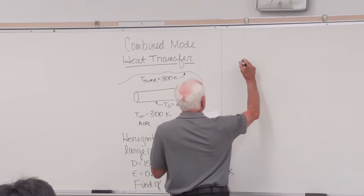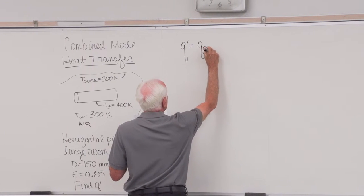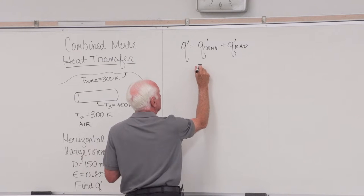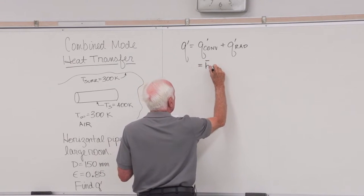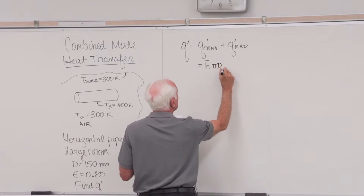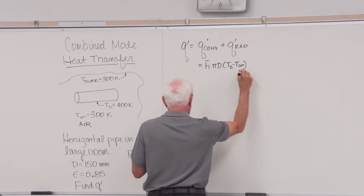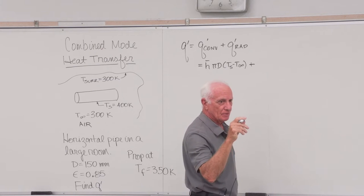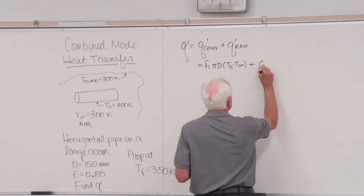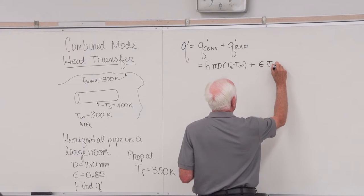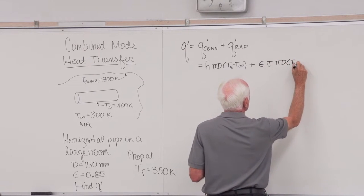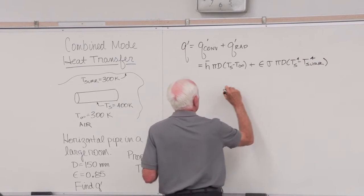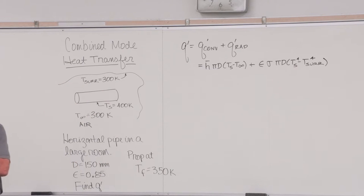We're asked to find the heat loss from the hot pipe per meter of pipe length, so Q prime. Our Q prime is composed of two parts: Q convection plus Q prime radiation. So there's the two heat transfer modes, radiation and convection.